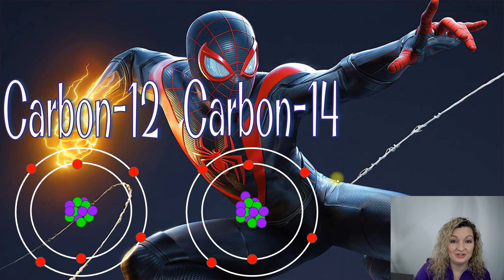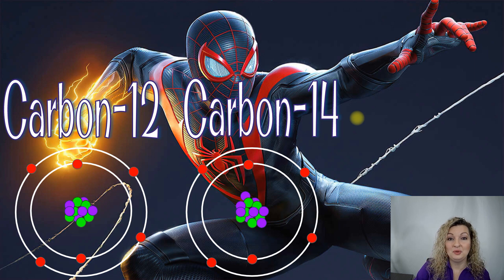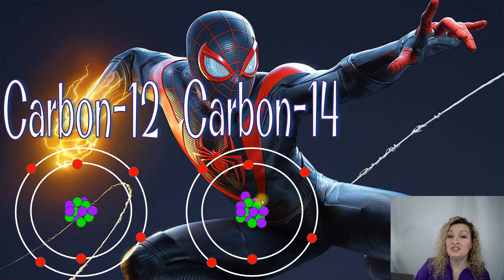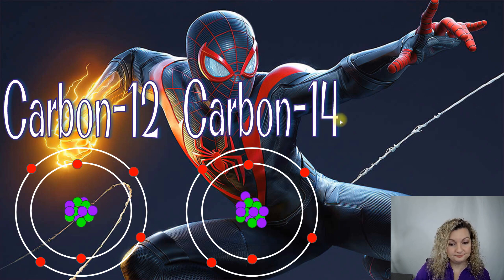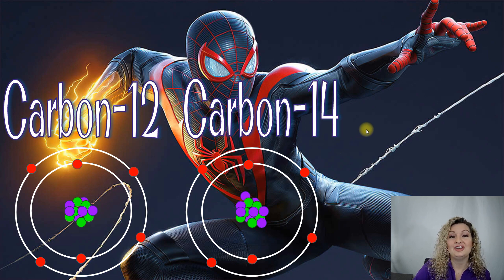Going back to the first picture of Carbon-12 and Carbon-14, I want to show you the nucleus of these so you can compare them now that you know more about isotopes. Carbon is number six on the periodic table and has six protons in each nucleus. What is changing is the number of neutrons — the purple dots. To make Carbon-12 with six protons, you need six neutrons, and if you count them, we indeed have six. For Carbon-14, you subtract six from 14, giving eight neutrons, and if you count those dots, we indeed have eight neutrons.